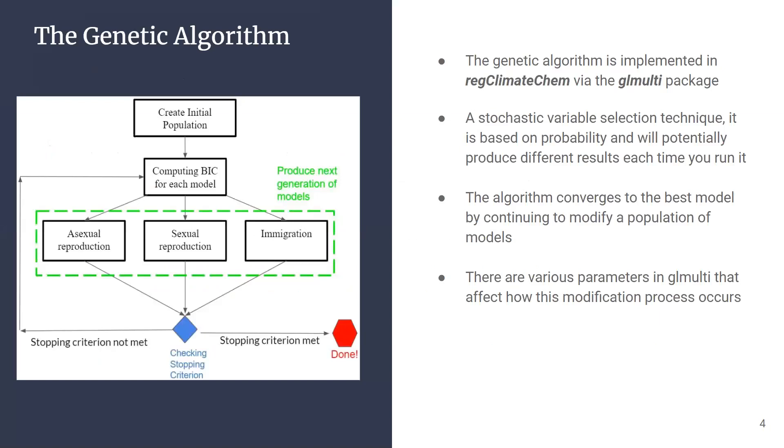This is the flow of the genetic algorithm. We implemented the genetic algorithm in regClimateChem via the GeoMulti package. It is a stochastic variable selection technique that is based on probability and will potentially produce different results each time that you run it.